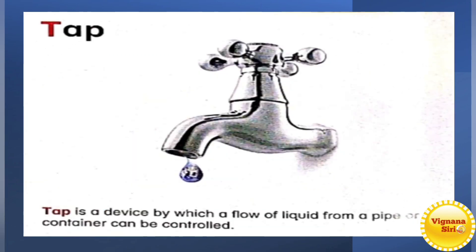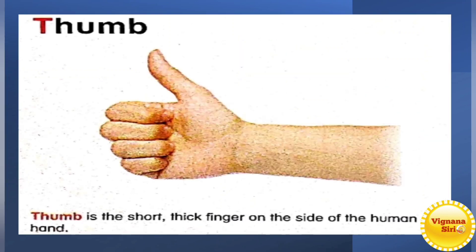T for tap. All our houses will have taps. It will control the flow of the liquid. If we don't want, we will just close it. If we want, we have to open the tap. It is the flow of liquid from a pipe or container which is controlled.